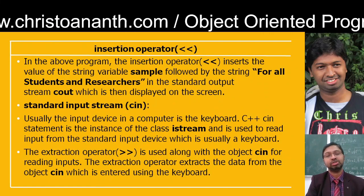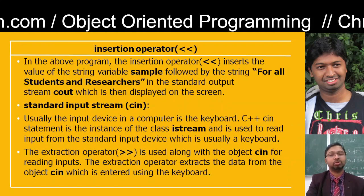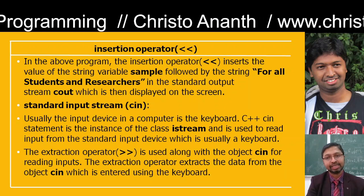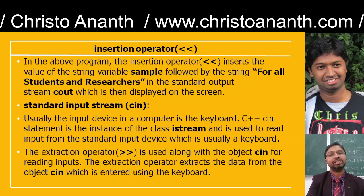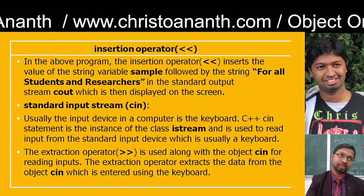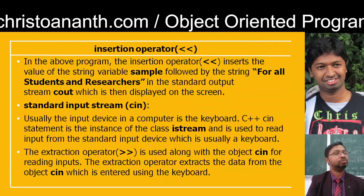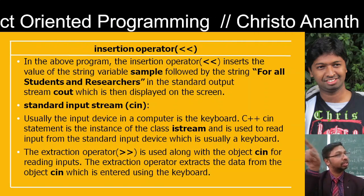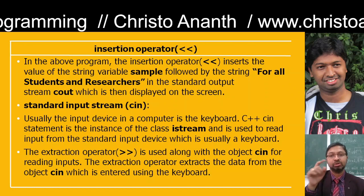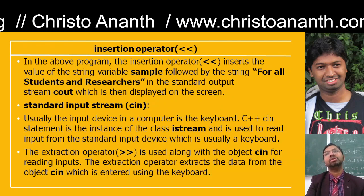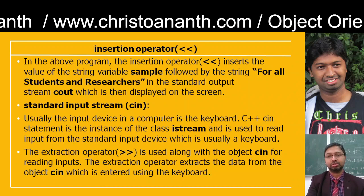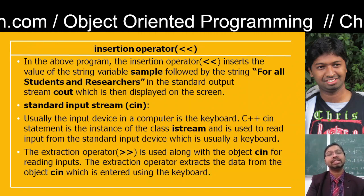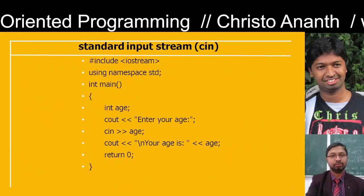Then you have standard input stream cin. Input is nothing but the keyboard. The C++ cin statement is nothing but the instance of the class input stream, that is going to read the input from the standard input device — which is nothing but the keyboard. In the input, you will use the extraction operator — double greater-than symbol — while double less-than is the insertion operator. Extraction is used along with cin for reading inputs, extracting data from cin which is entered using the keyboard.